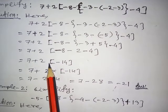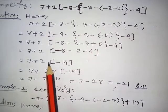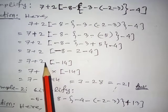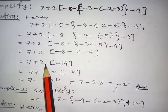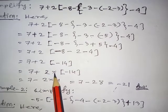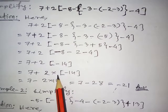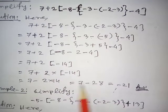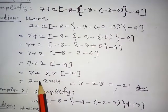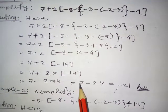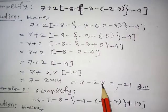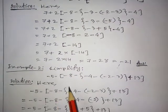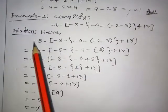Before this there is a 2 with no sign, which means multiplication. So 14 multiplied by 2 equals 28, and the minus sign carries over. So we have 7 minus 28, and the result is minus 21.